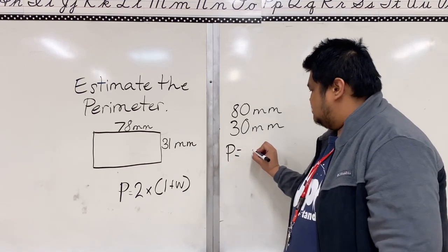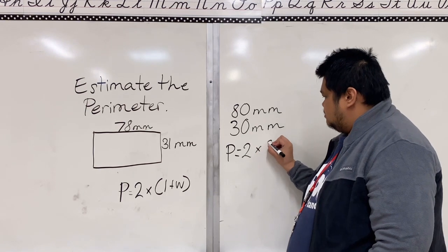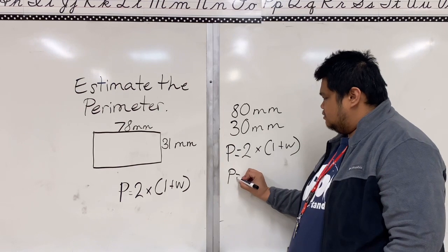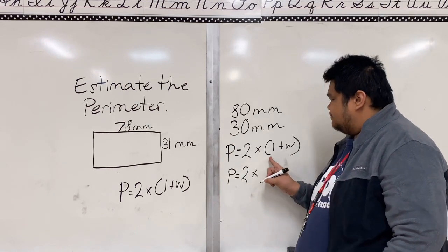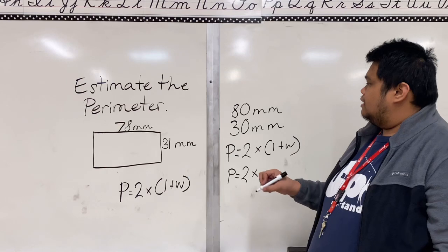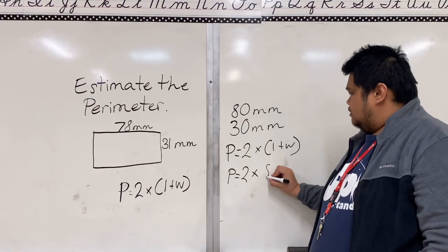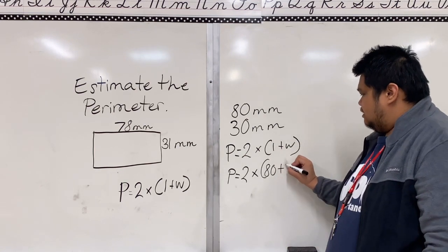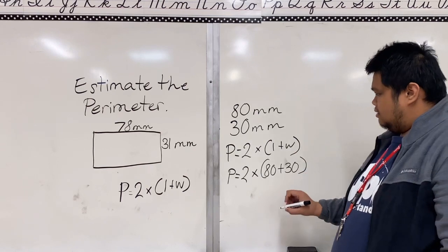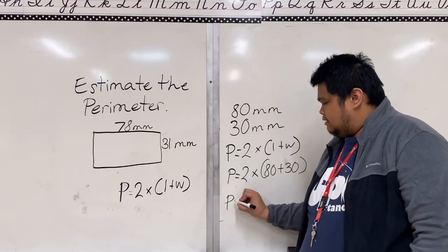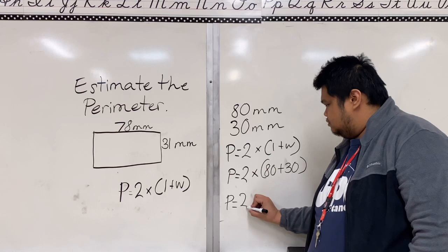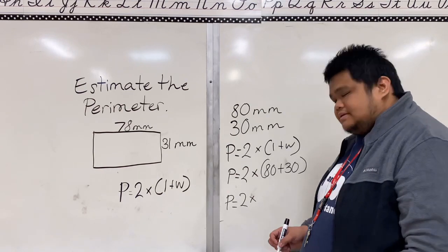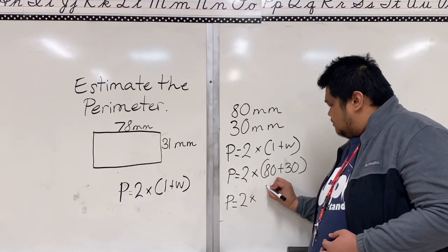So now let's recopy the formula, which is two times length plus width. P is equals to two times - what is our length? Our length is 80 plus 30. Now let's solve it.